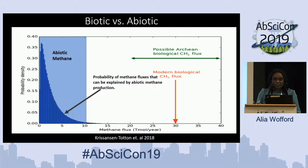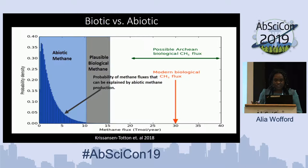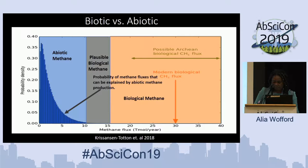When you get to 10 to possibly 15 teramoles per year, there is still a slight chance — less than 0.1% — that it could be justified by abiotic methane production. You can think of this as your gray area or plausible biological methane production range. After the 15 teramoles per year mark, this is your definitive biological methane production range, where you would most likely see life.